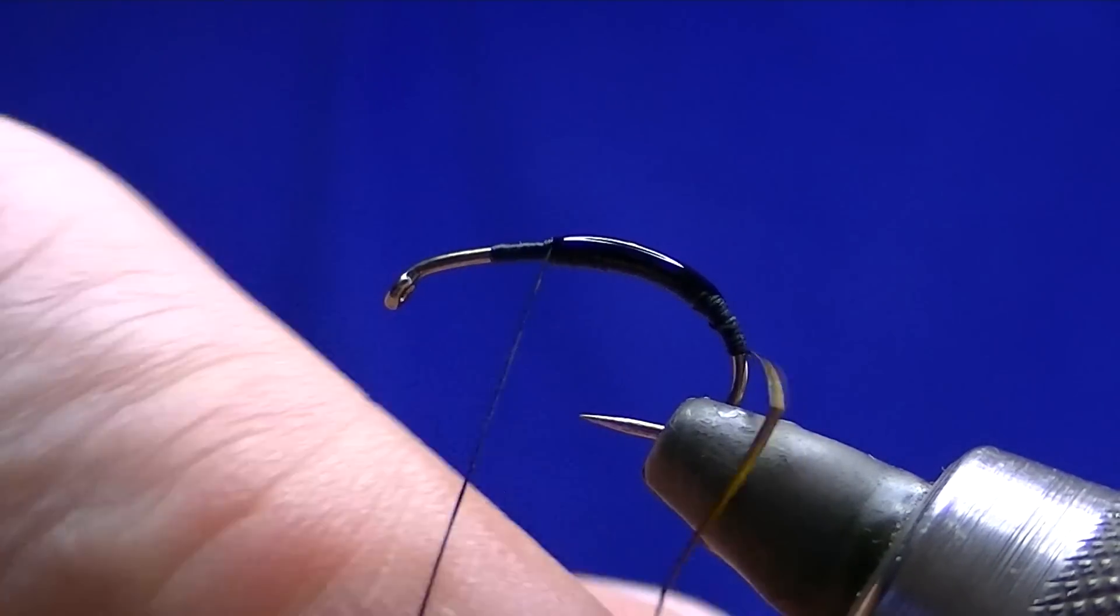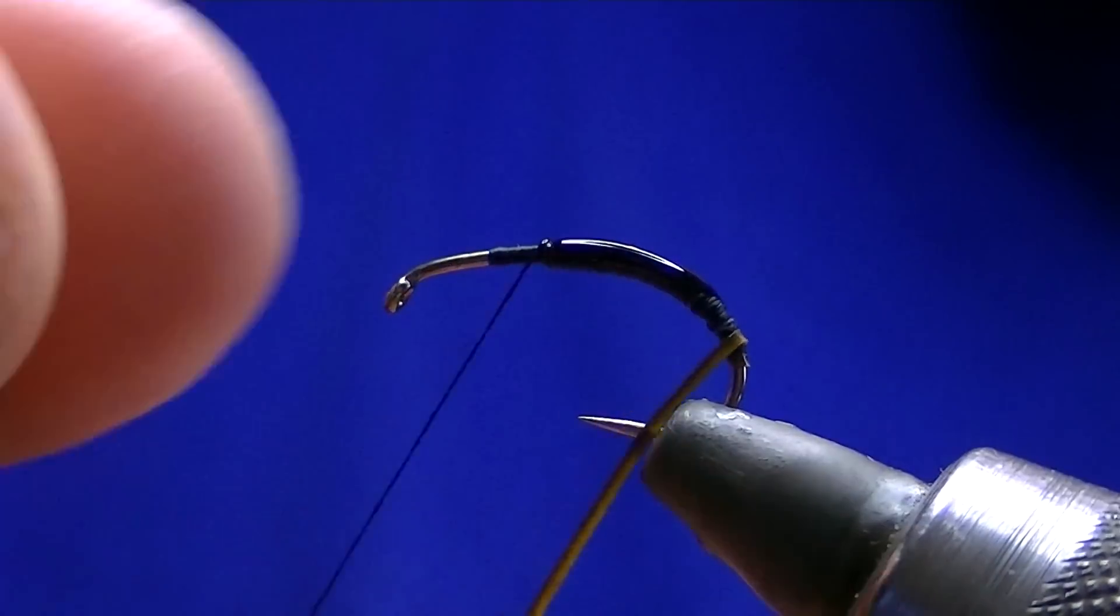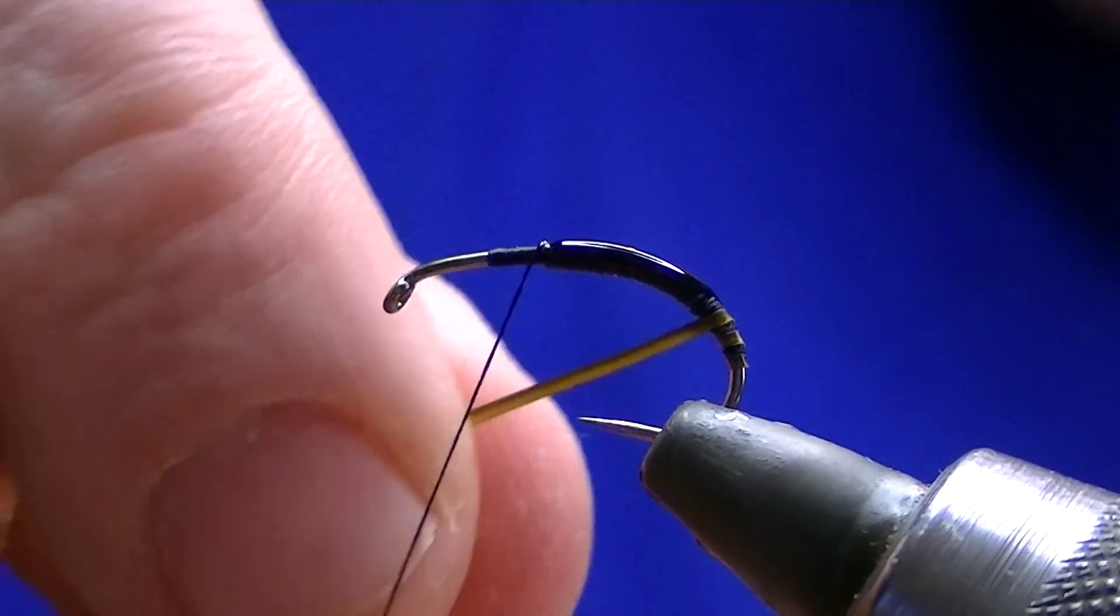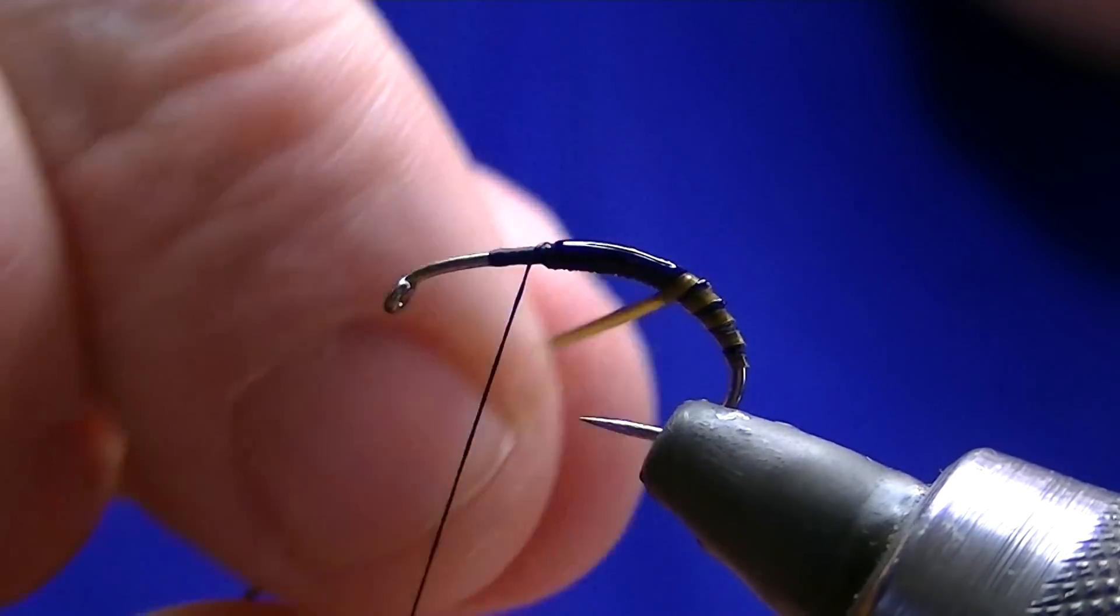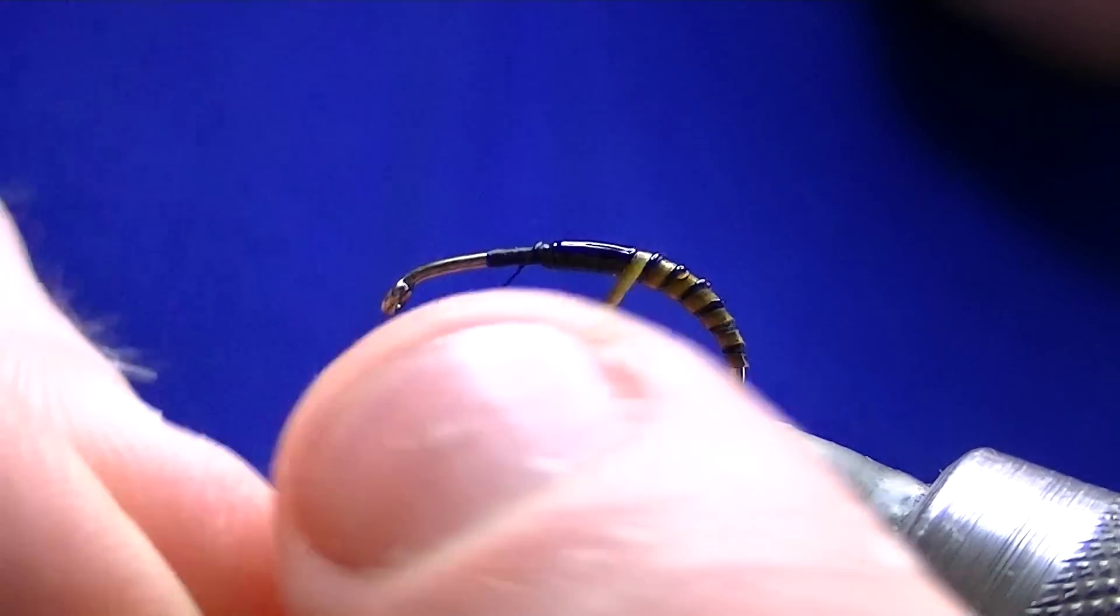That's just to help when you're putting the peacock on because peacock strip quills are a nightmare. I'm not actually touching turns here, I'm using the thread to make it look bigger, make the banding on the peacock look bigger.